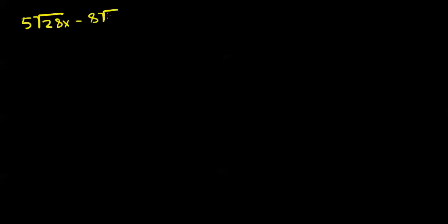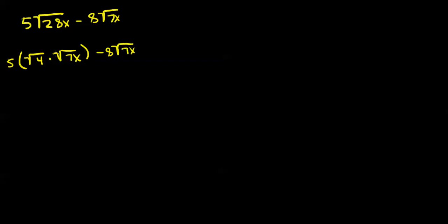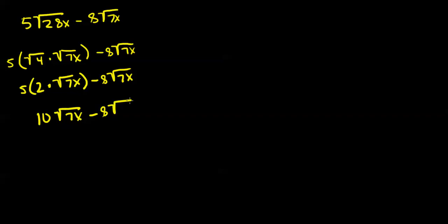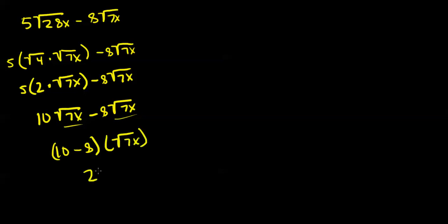Now let's look at another example: 5 radical 28x minus 8 radical 7x. Start by simplifying — radical 28x can be broken down to radical 4 times 7x, because 4 is a perfect square, minus 8 radical 7x. Radical 4 equals 2, so we have 5 times 2 times radical 7x minus 8 radical 7x. 5 times 2 equals 10, giving us 10 radical 7x minus 8 radical 7x. They're like radicals, so 10 minus 8 equals 2, leaving us with 2 radical 7x.